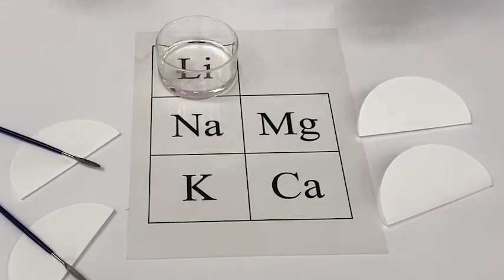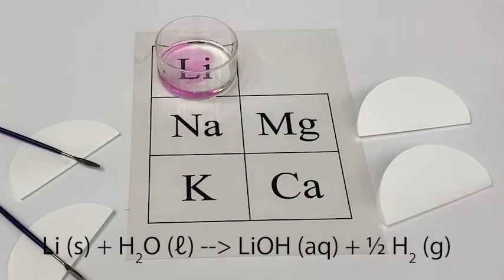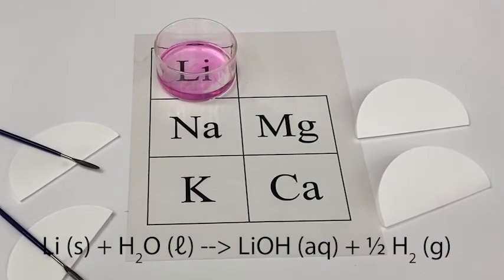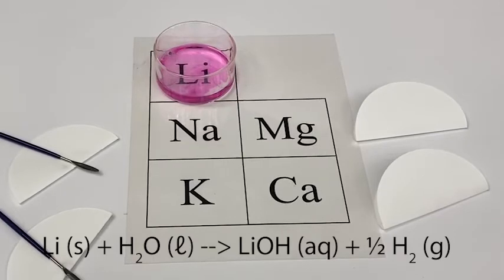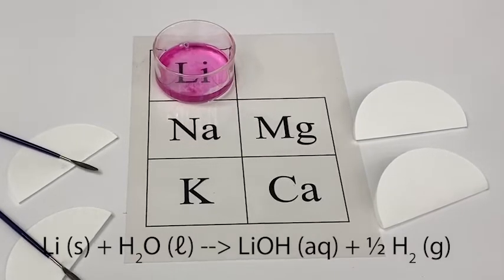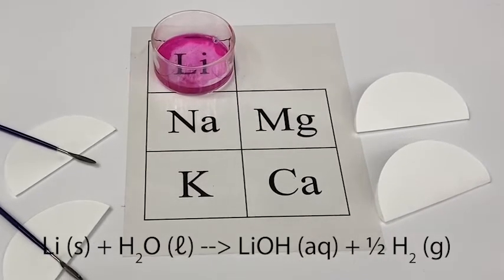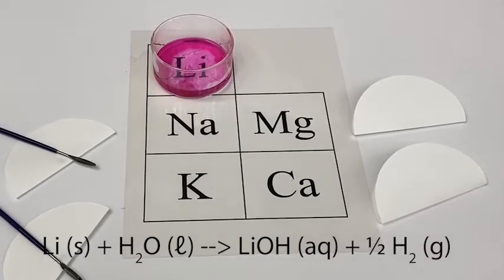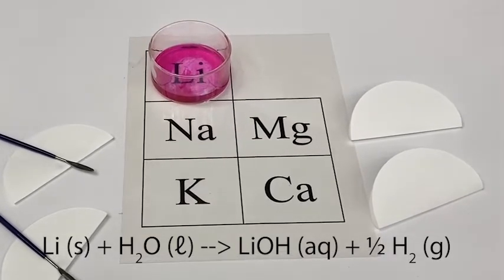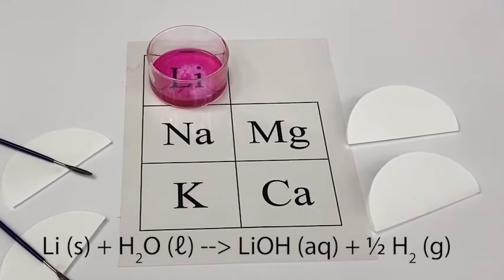Let's start with lithium. The reaction between alkali metals and water is spontaneous. It generates a base, lithium hydroxide, and hydrogen gas. You can see it's so vigorous that the lithium skitters around the dish.